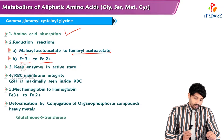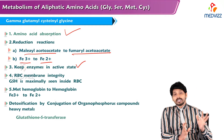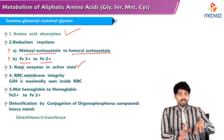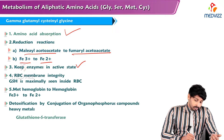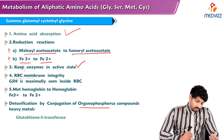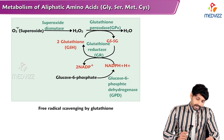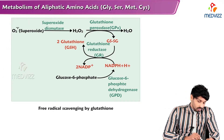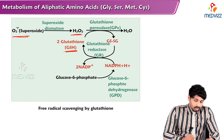Glutathione is also involved in reduction reactions such as malate to fumarate and reduction of iron from ferric to ferrous form, keeping enzymes in active state. It maintains RBC membrane integrity, the shape of RBC. Glutathione is involved in conversion of methemoglobin to hemoglobin and detoxification by conjugation of organophosphorus compounds and heavy metals via glutathione S-transferase.